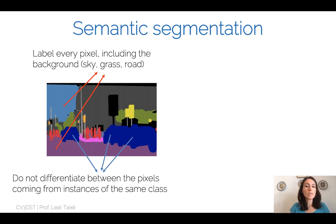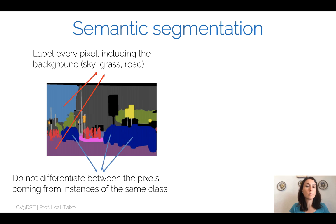So we want to label a pixel into sky, grass, road, but also into objects that at the time of doing semantic segmentation we're not really counting. Essentially all the pixels coming from different instances of the same class are labeled with the same label in semantic segmentation. All pixels belonging to three cars get the same label 'car', so objects that can be counted like cars or people are treated the same way as objects that cannot be counted like sky, grass, or road.